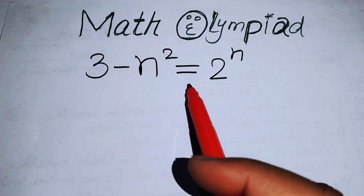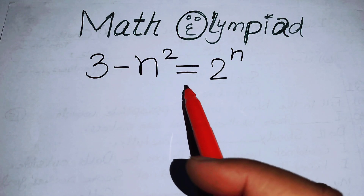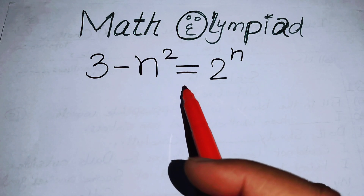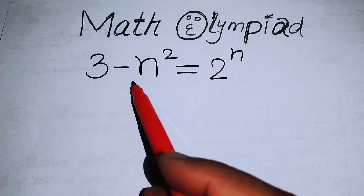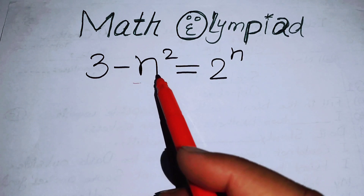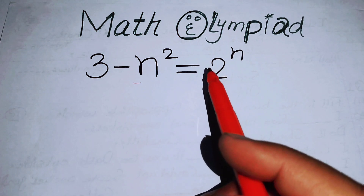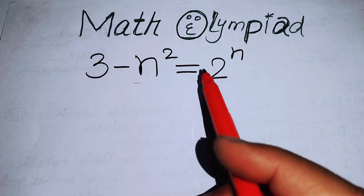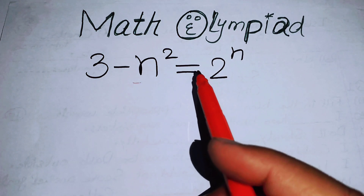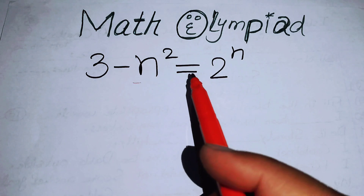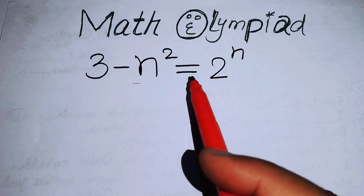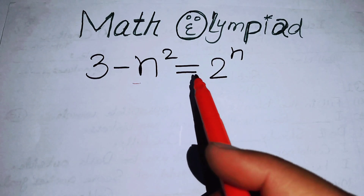Hello everyone, welcome back to the Map of Mathematics. In this video we are going to solve this nice algebra problem: 3 minus n squared is equal to 2 to the power of n. We will solve this problem for the values of n.